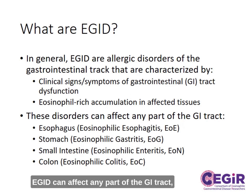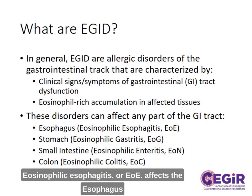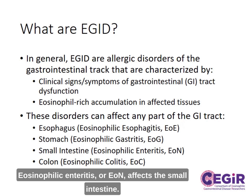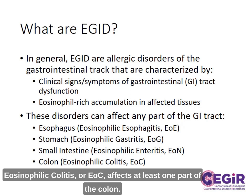EGID can affect any part of the GI tract, and the diseases are named by the affected area. Eosinophilic esophagitis, or EoE, affects the esophagus. Eosinophilic gastritis, or EoG, affects the stomach. Eosinophilic enteritis, or EoN, affects the small intestine. Eosinophilic colitis, or EoC, affects at least one part of the colon.